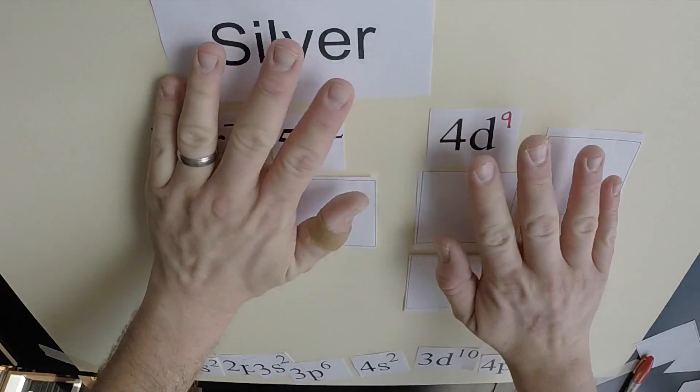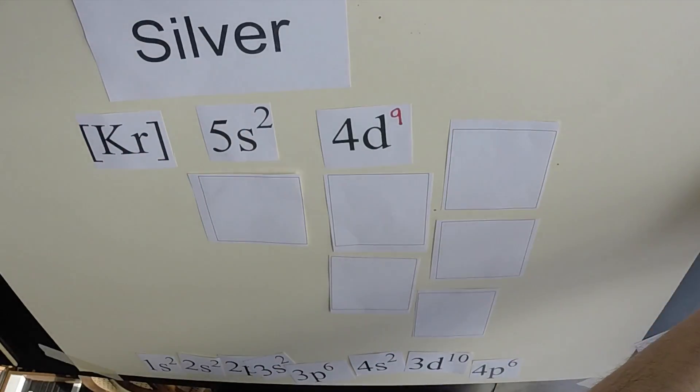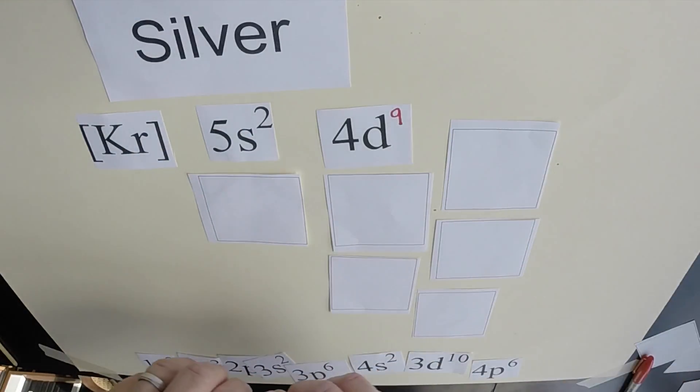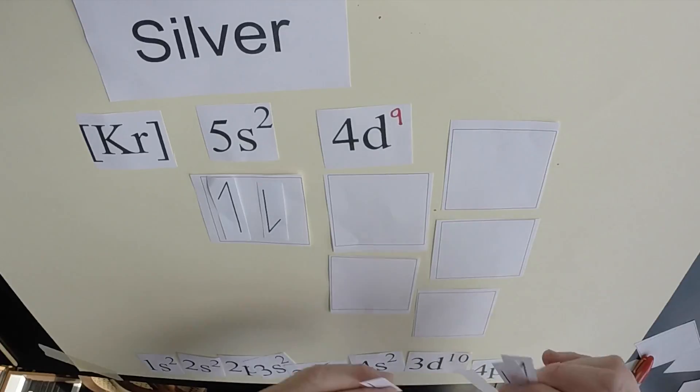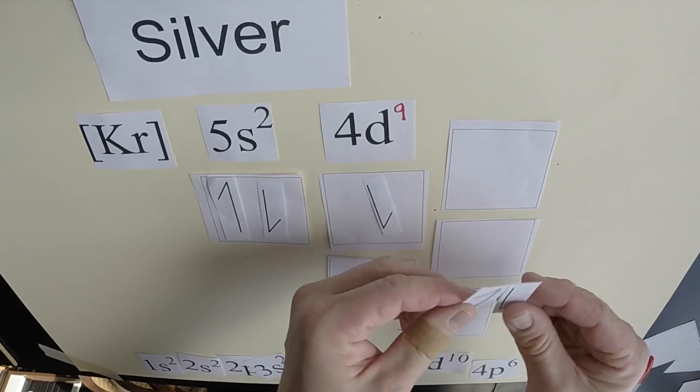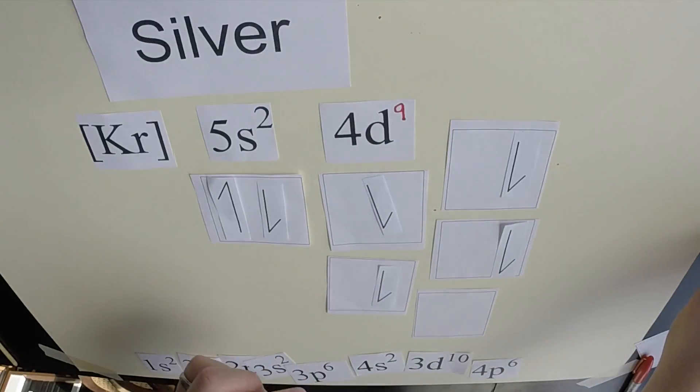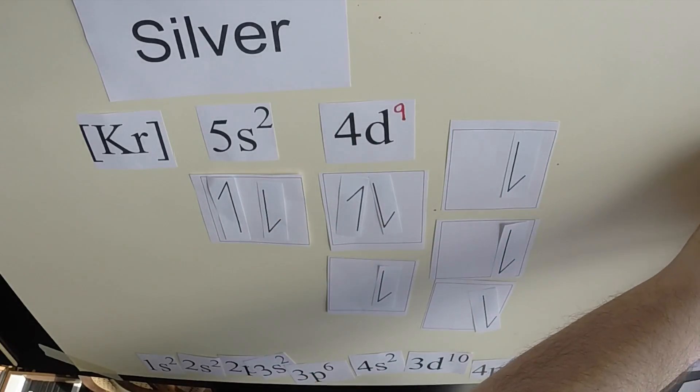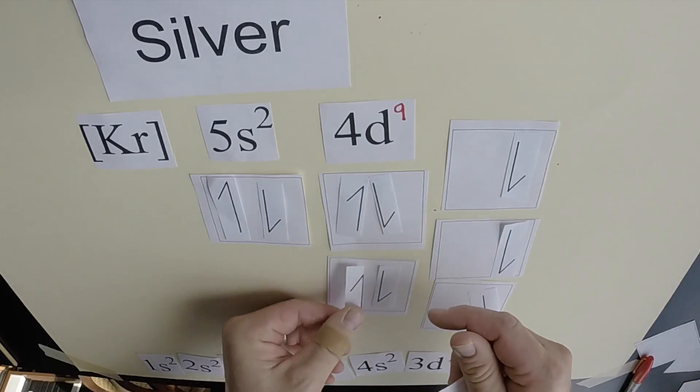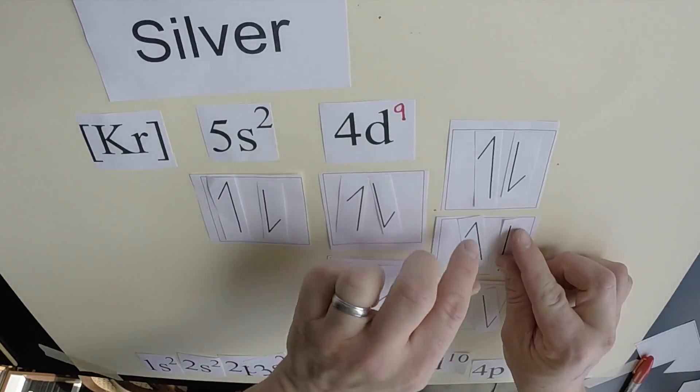Now, to configure the electrons, I'm going to move this all over a touch. Now, to place the electrons, rather, 5s gets two electrons. There we go. And 4d will get nine electrons. So, again, Hund's rule: 1, 2, 3, 4, 5. Then we'll go back and double up: 1, 2, 3, 4, 5, 6, 7, 8, 9 electrons.